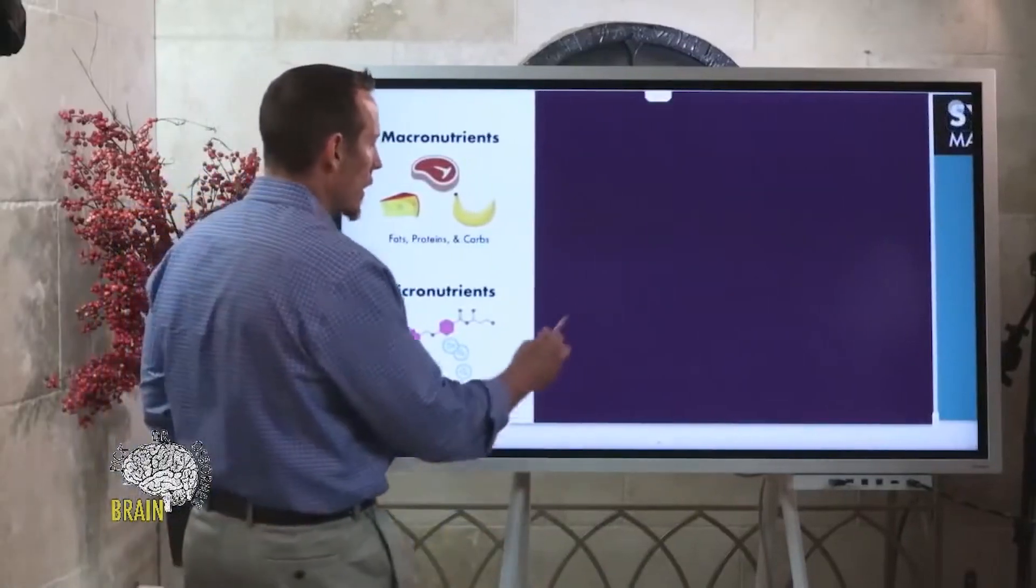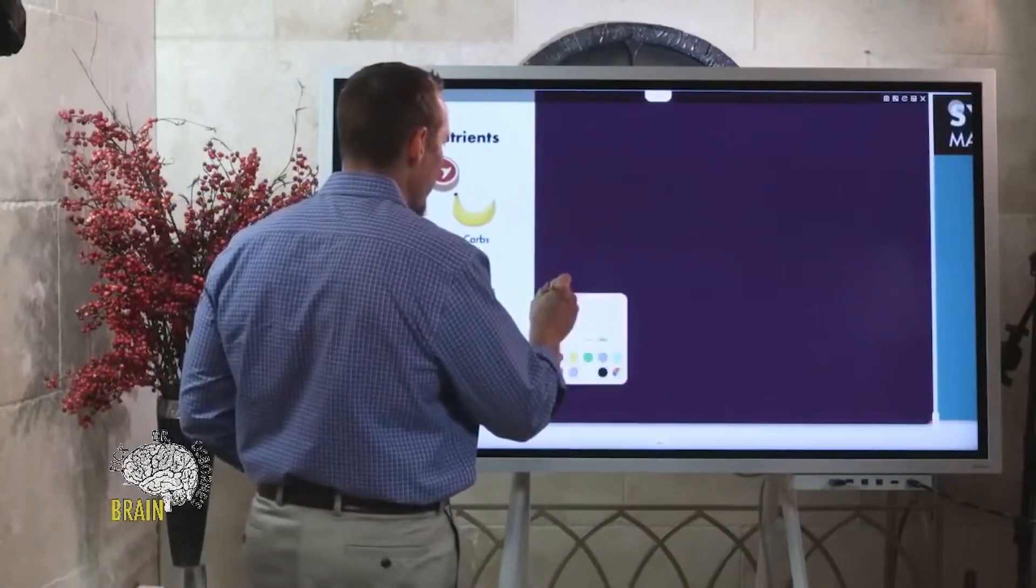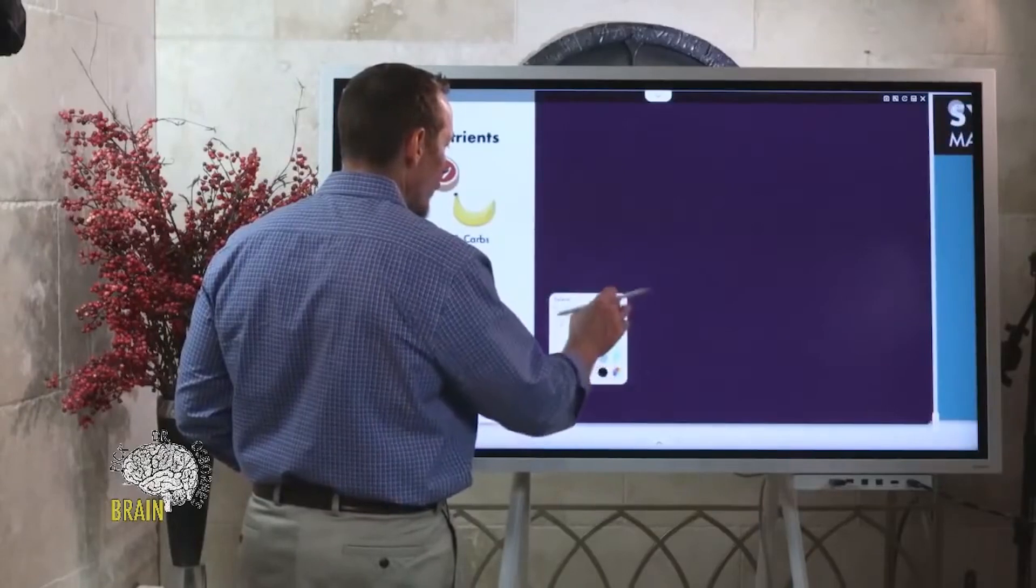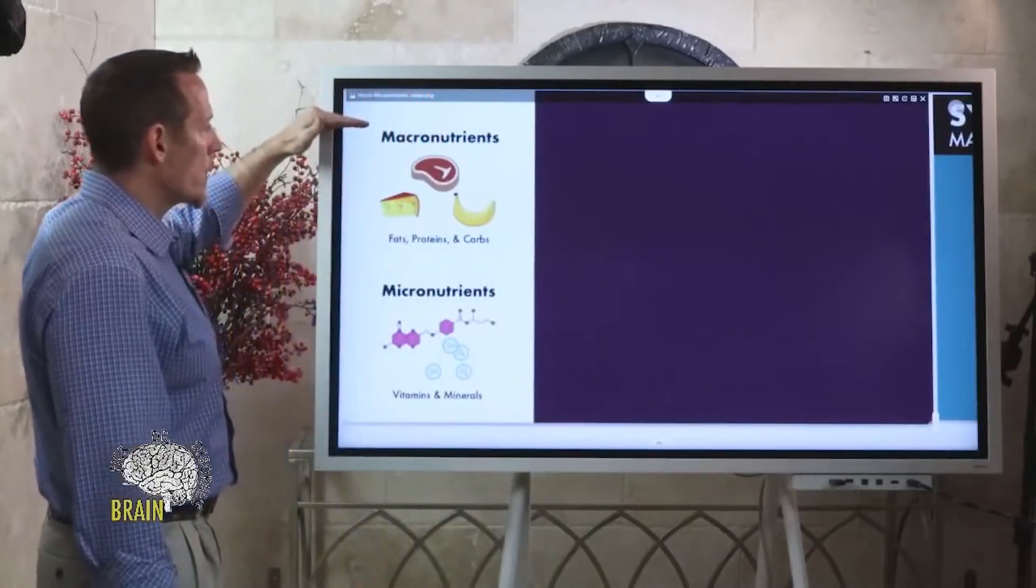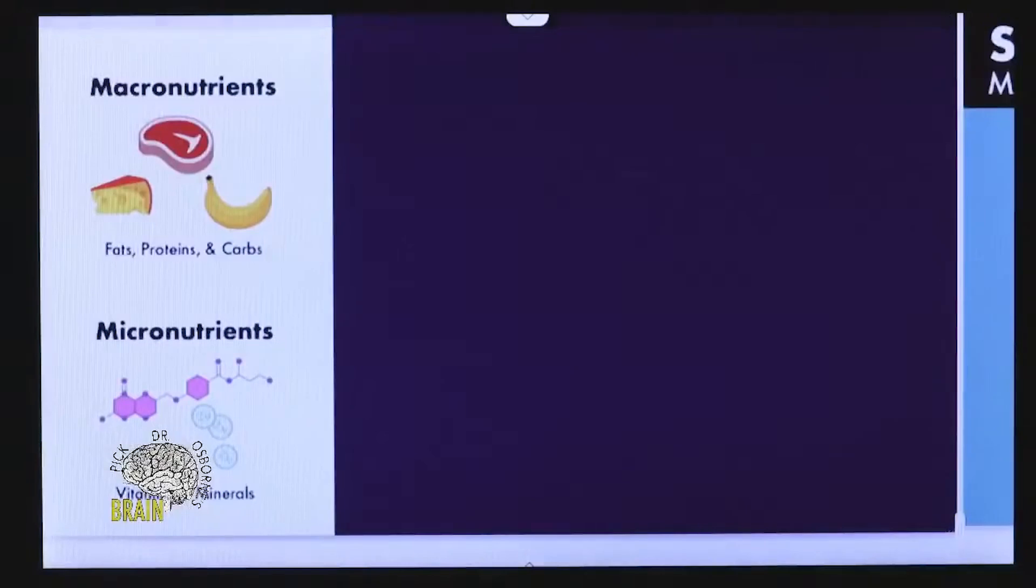Moving on to the next slide here, what we're looking at are macronutrients—macro meaning large—which include your fats, proteins, and carbs. Then we have micronutrients, which are your vitamins and minerals.